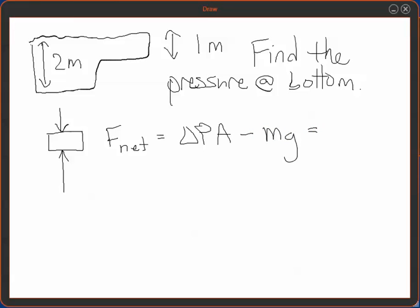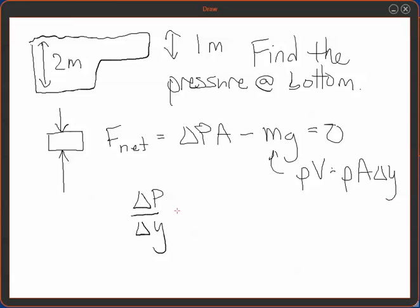And if it's not going anywhere, that's what we mean by equilibrium, it has to be zero. So if we write the mass of a little slab as rho times V or rho A times the little height of the slab, what we're left with is hydrostatic equilibrium, which is that delta P over delta Y is equal to rho G into the fluid.